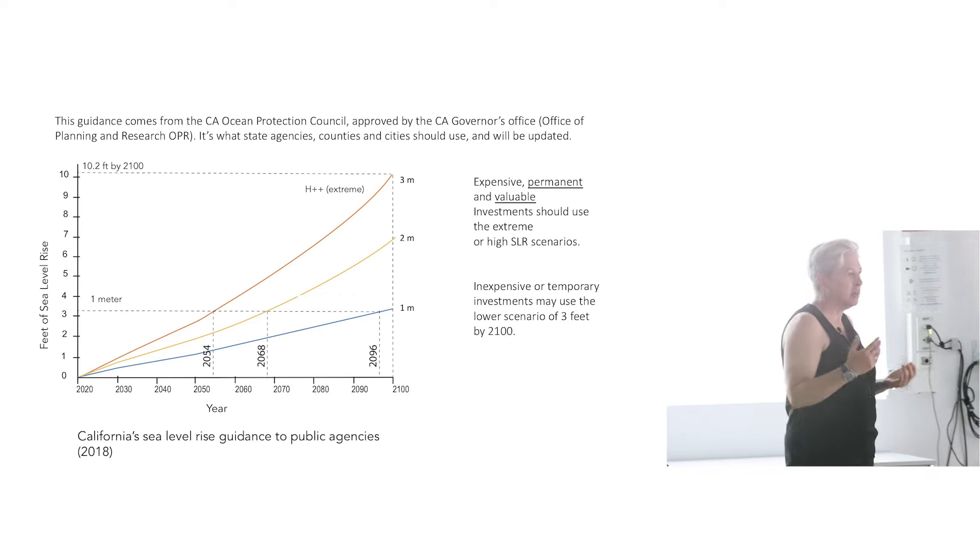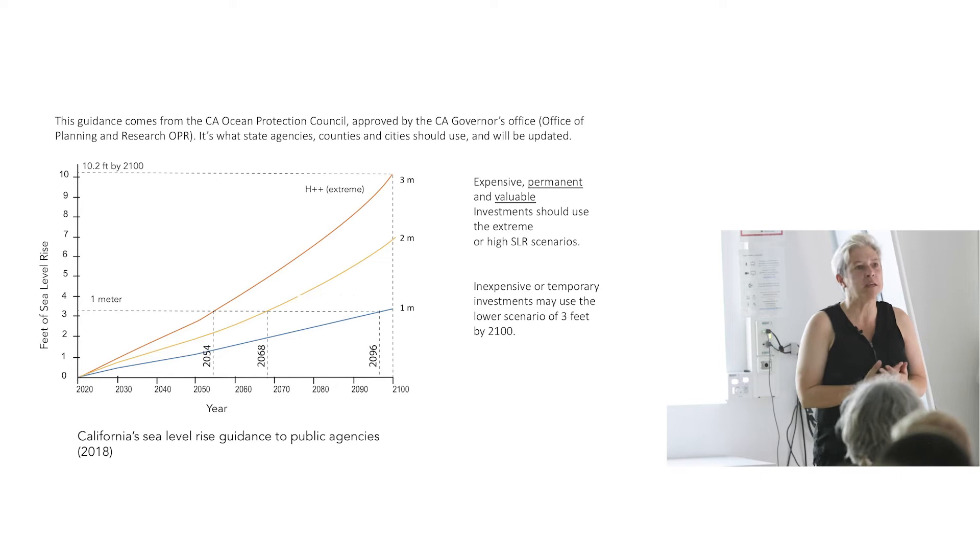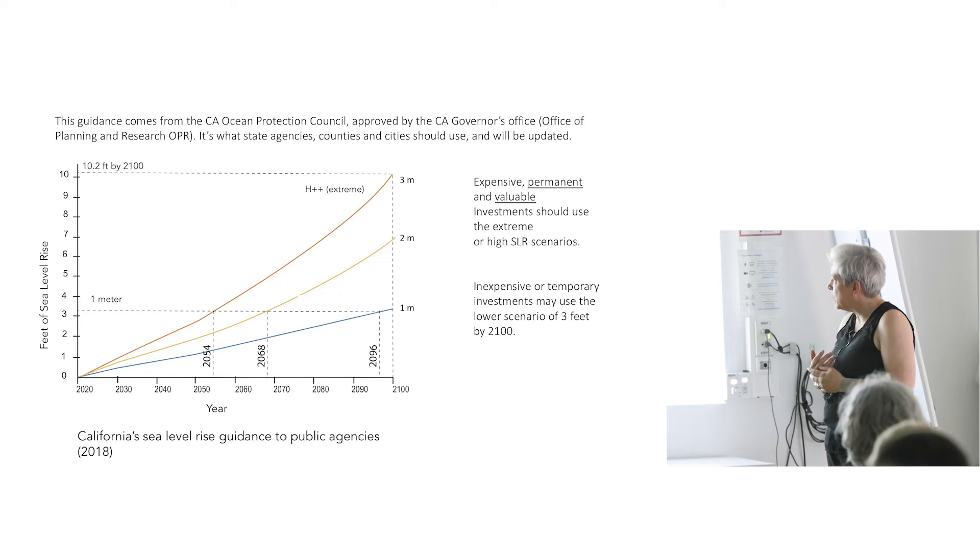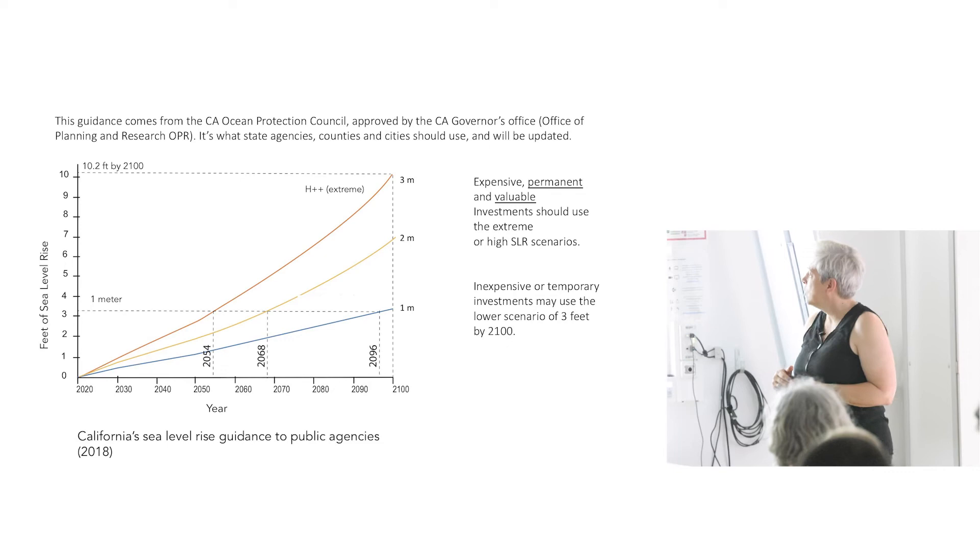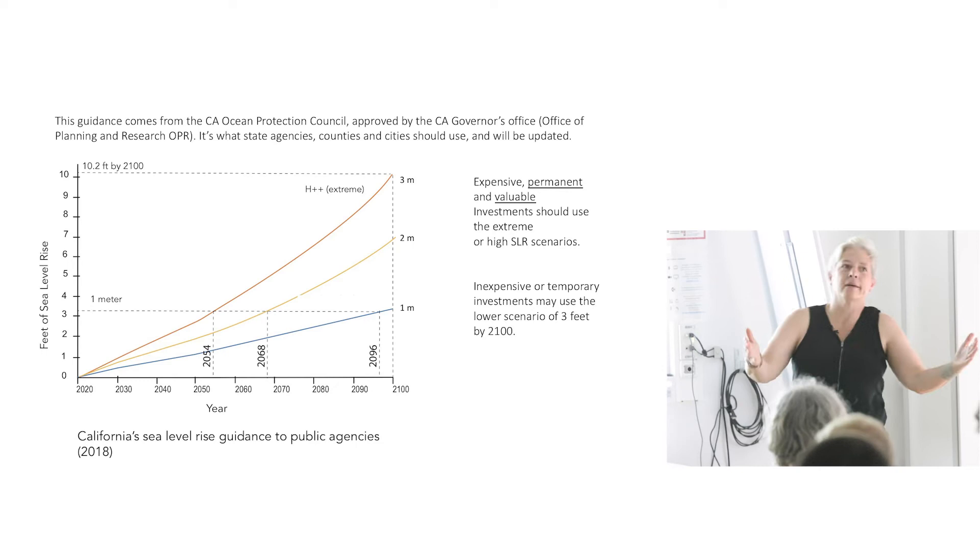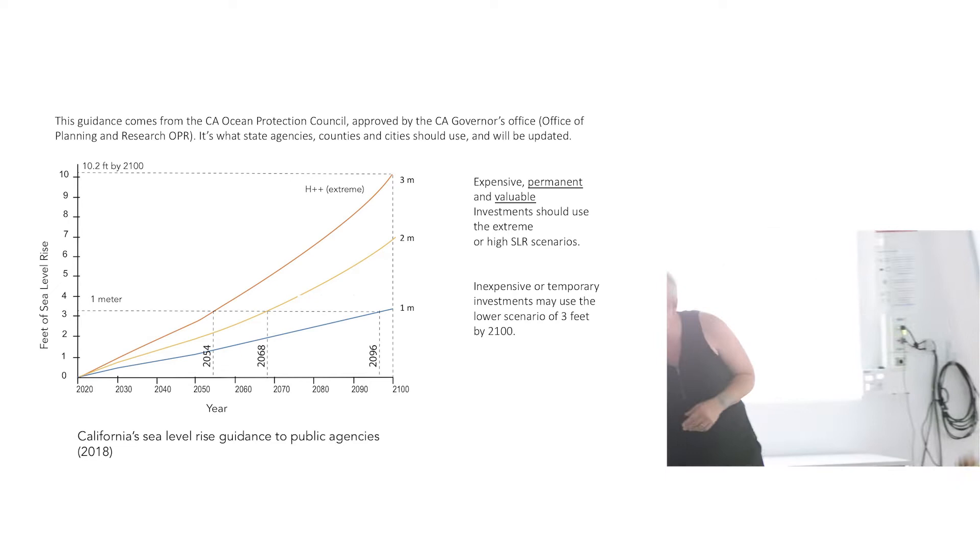The state of California has tried to give guidance to its cities and public agencies about what kind of sea level rise we should anticipate. In a strategic context, if you're building something inexpensive and temporary, you can imagine as little as one meter by 2100, which would be something closer to half a meter by 2054 or 2060. If you're planning something permanent like a new highway or sewage treatment plant or urban neighborhood, you're supposed to consider two to three meters of sea level rise, which is a lot.